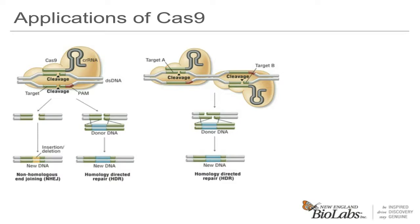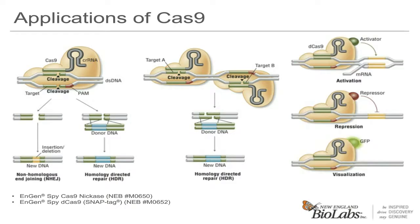D-Cas9, or nuclease deficient or dead Cas9, has both nuclease domains mutated such that it only retains RNA-guided DNA binding without cleavage. Once programmed, it will find and recognize its target site. This will allow for potentially tethering such things as activators or repressors to D-Cas9 to localize them to certain sites in a genome. Additionally, they could be used for visualization by adding fluorescent molecules such as GFP.